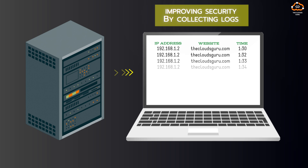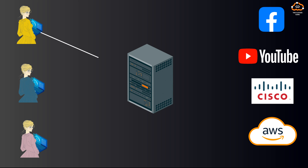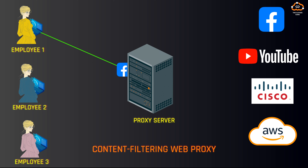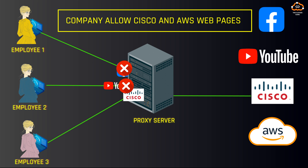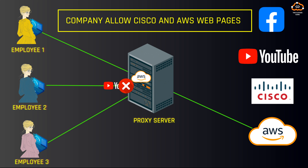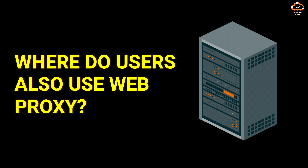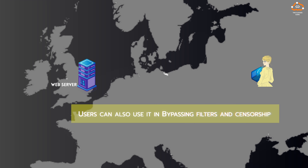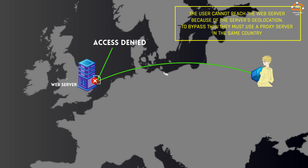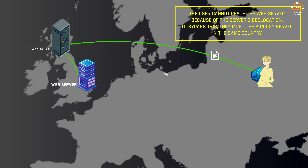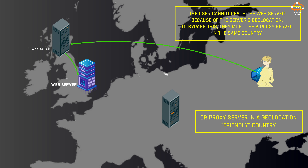Another benefit is improving security for companies. A proxy can keep track of what websites their employees are looking at. When a company's employee is surfing the internet, the proxy will record what websites they're visiting and how long they spent on those websites. The company can configure the proxy to block certain websites to keep their employees from visiting them. Users can also use a web proxy for bypassing filters and censorship. For example, users who want to access internet servers where IP-based geolocation restricts services to a certain country can access them using a proxy located in that country.